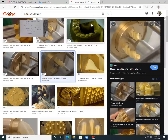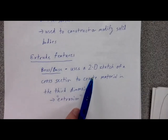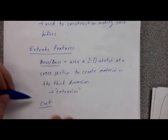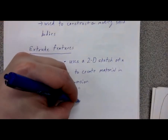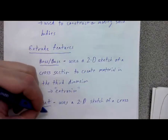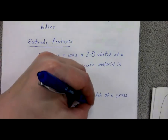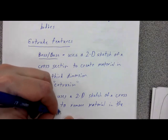SolidWorks does something very similar. The extruded boss or base is one of the simplest ways we generate material in SolidWorks — we draw the cross section and push material through in a third dimension in the shape of that cross section. There's also the extruded cut, which is very similar but uses a two-dimensional sketch of a cross section to remove material in the third dimension.